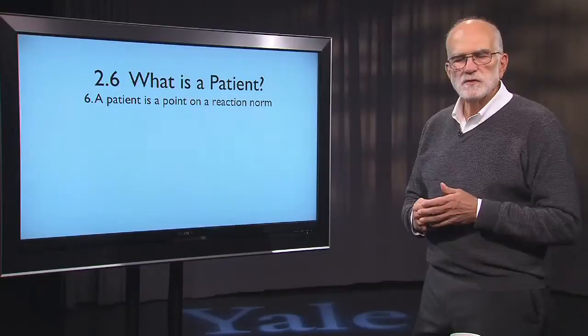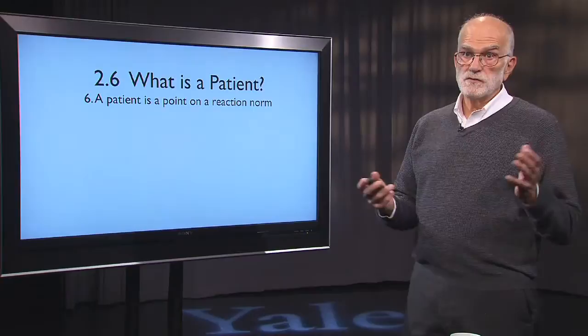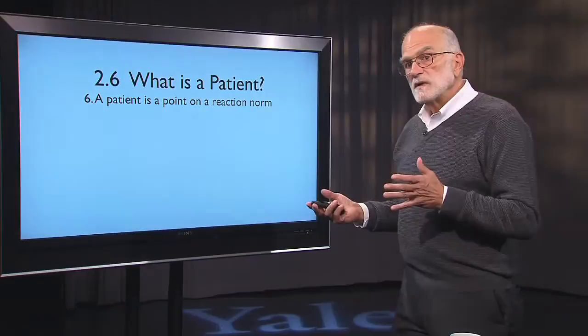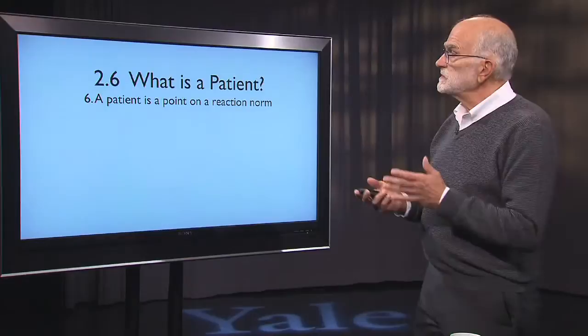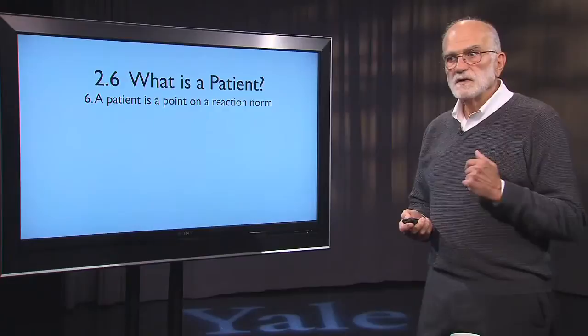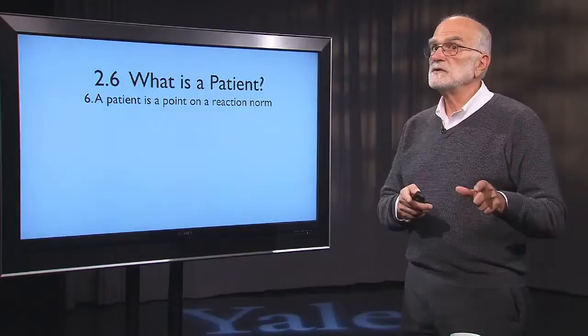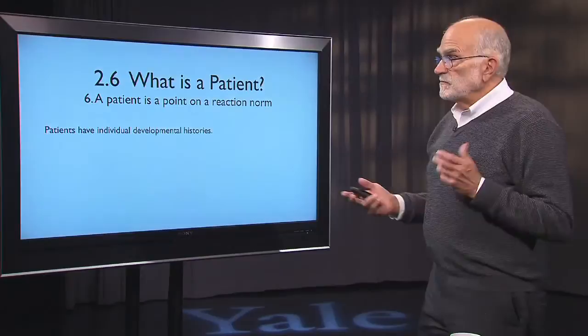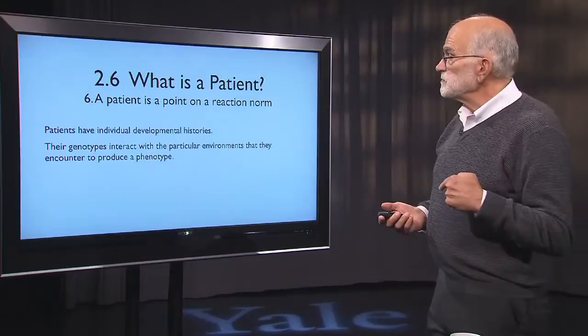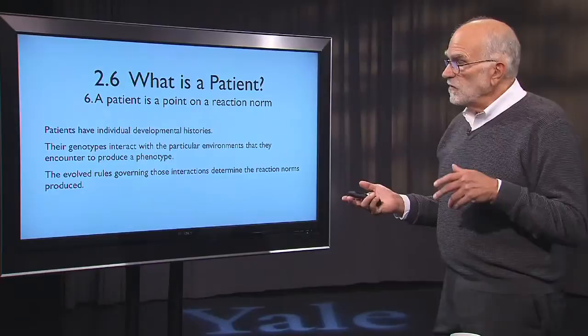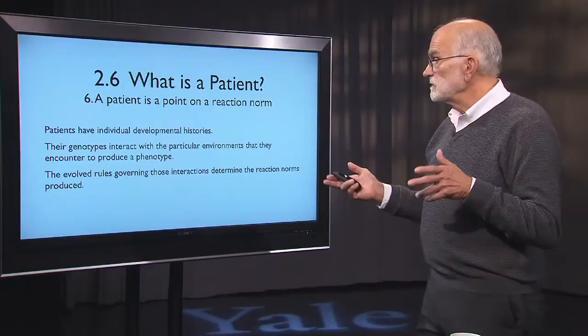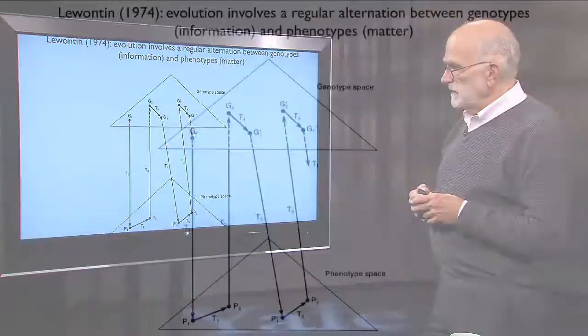We have seen how useful the concept of a reaction norm is in analyzing life history evolution. However, reaction norms occur in many traits — they're a general feature of trait evolution and trait response to the environment. A patient is a point on a reaction norm or a reaction surface. We see one possible realization of that individual, and behind it there are a host of other possible ways that that particular genotype could have turned out depending upon the environment it encountered. Patients have individual developmental histories; their genotypes interact with those particular histories to produce the phenotype. There are evolved rules that govern those interactions, and those rules determine the reaction norms that are produced.